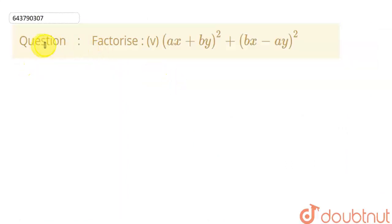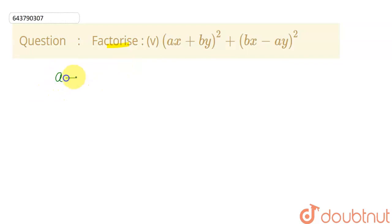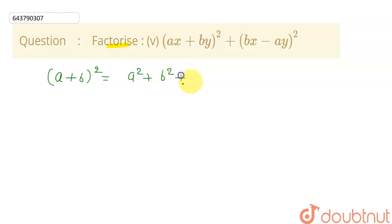So students, in this question we need to factorize the given equation. Now to factorize this equation, let's start using two identities. The first is: a plus b whole square is defined as a squared plus b squared plus 2ab.